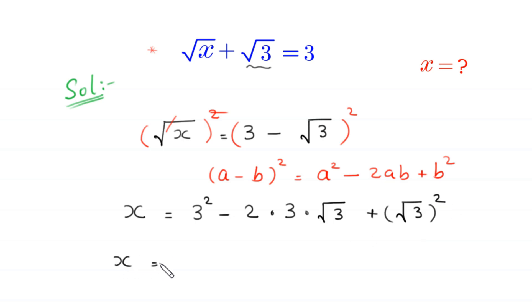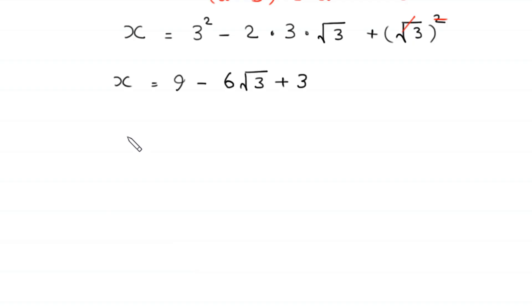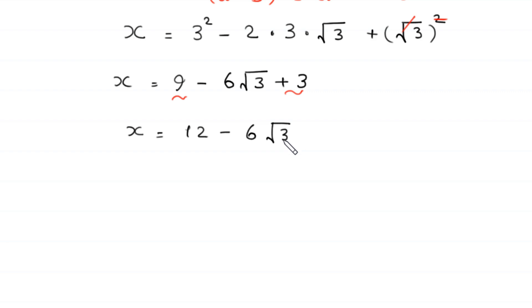So x equals 3 squared, which is 9, minus 2 times 3 gives 6 times root 3, plus root 3 squared. The square cancels with the square root, leaving 3. So x equals 9 plus 3, which is 12, minus 6 times root 3. This is the final value of x.